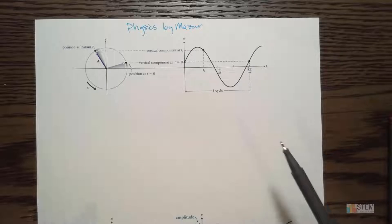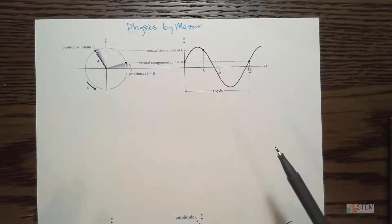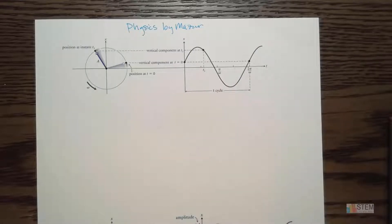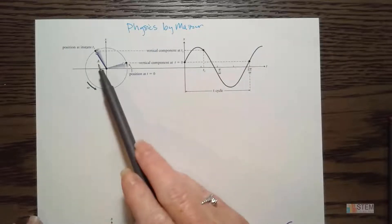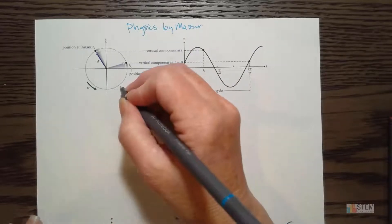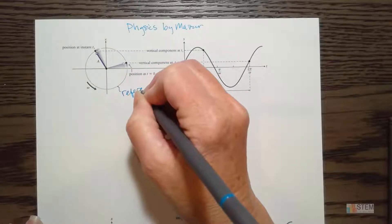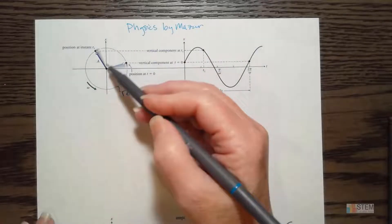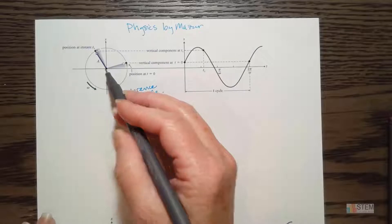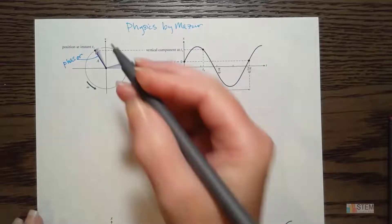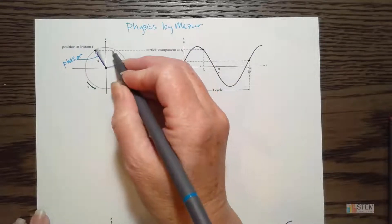Anytime you're modeling a spring-mass system, you're going to have oscillation motion like this. We call it simple harmonic motion. Now what we see here is a circle — this right here is called a reference circle. We've got this reference circle and it's got an arrow on it.